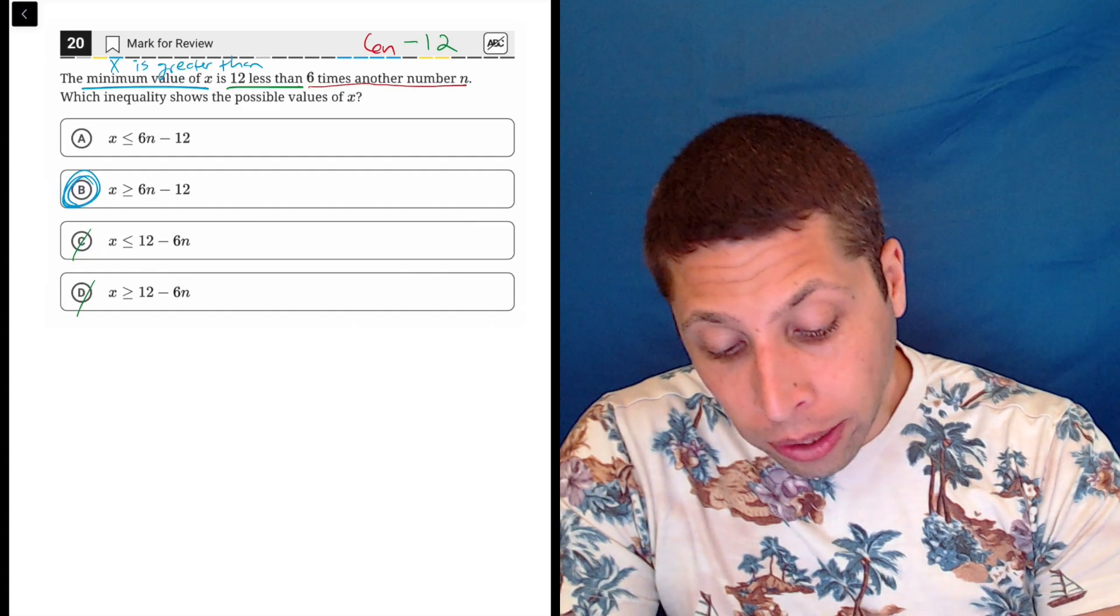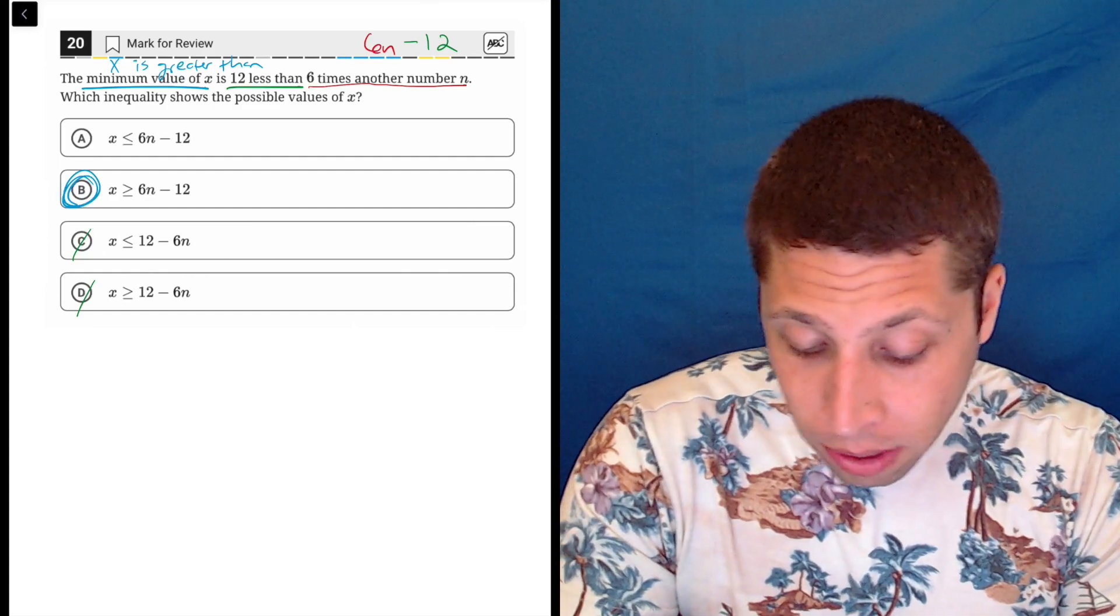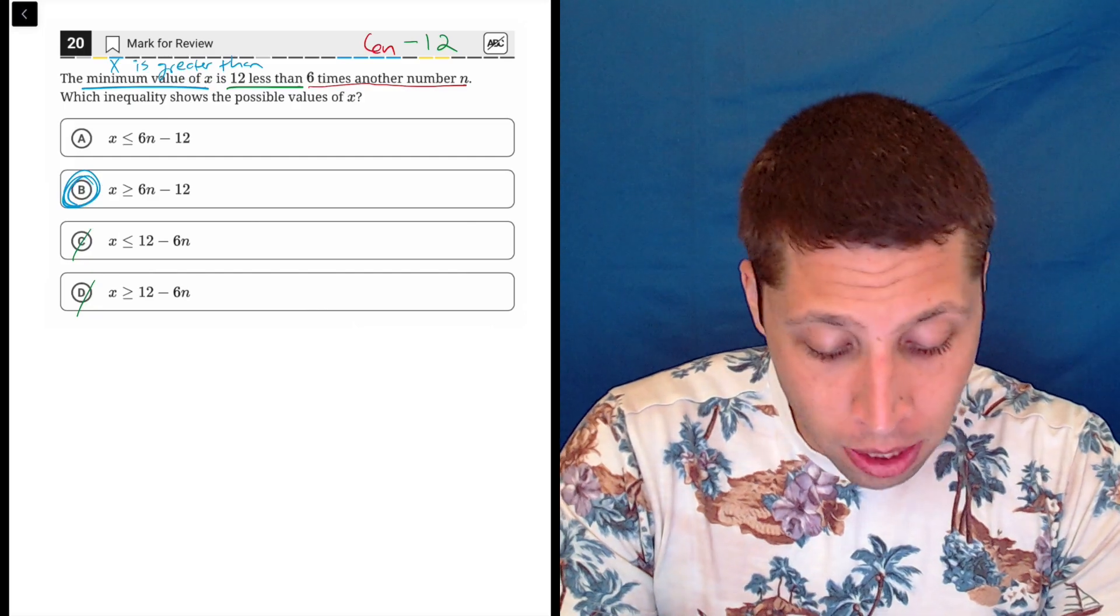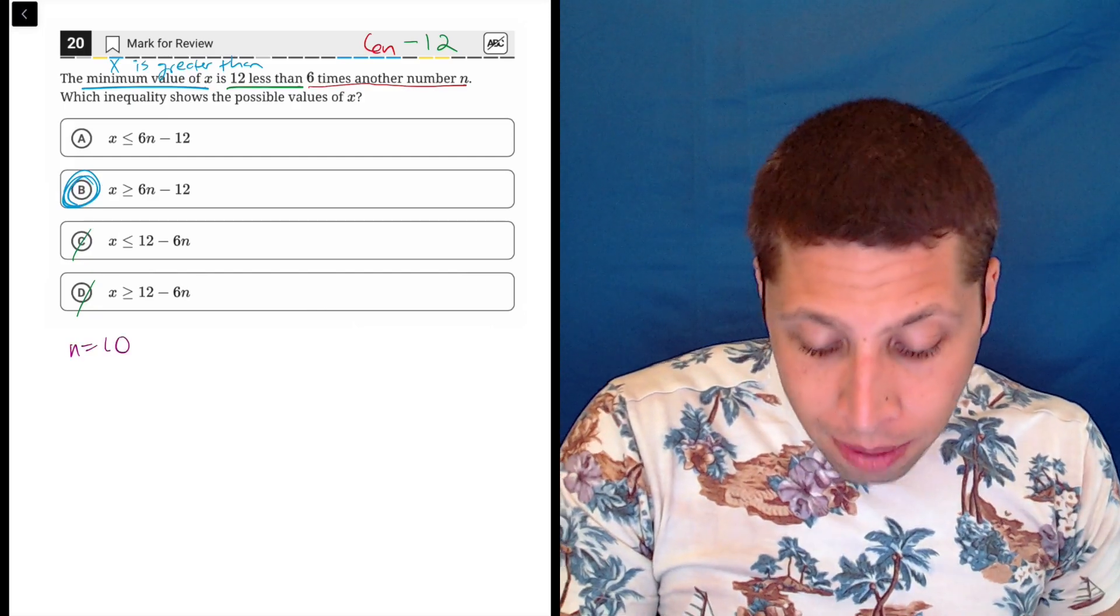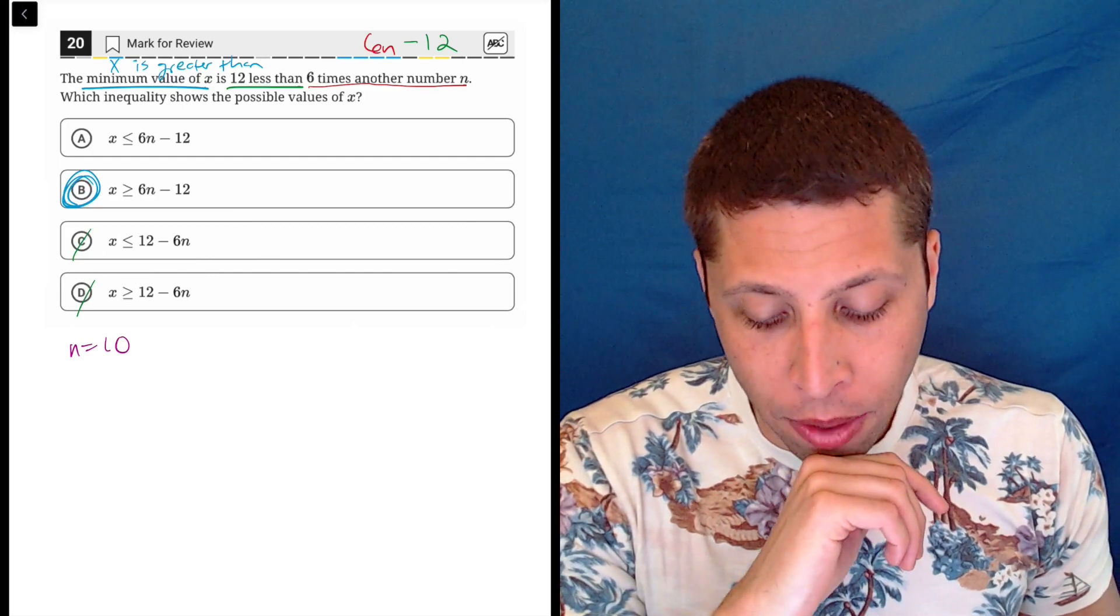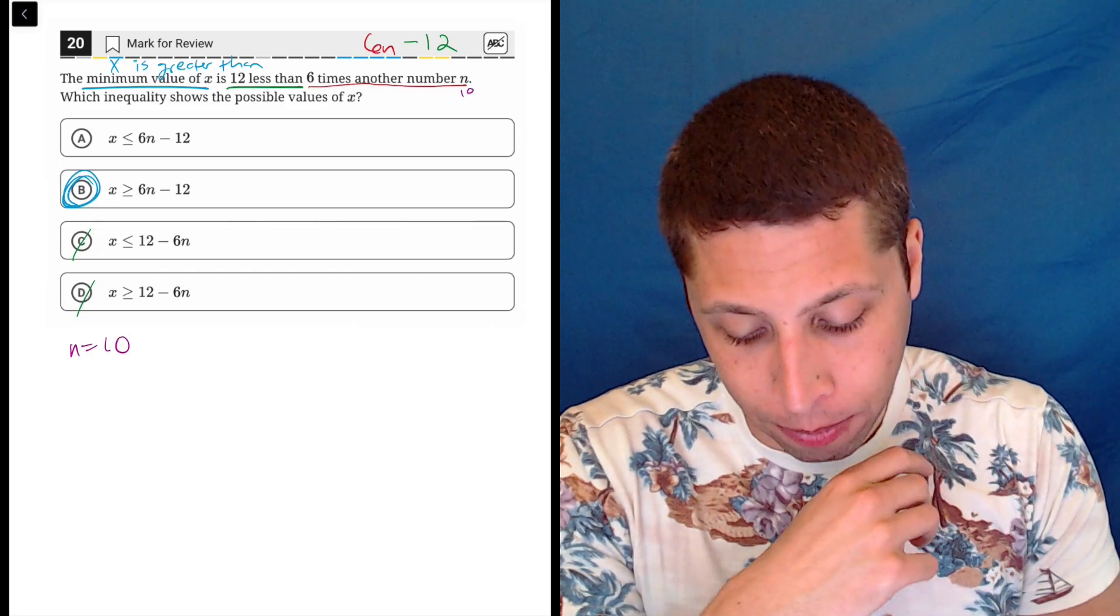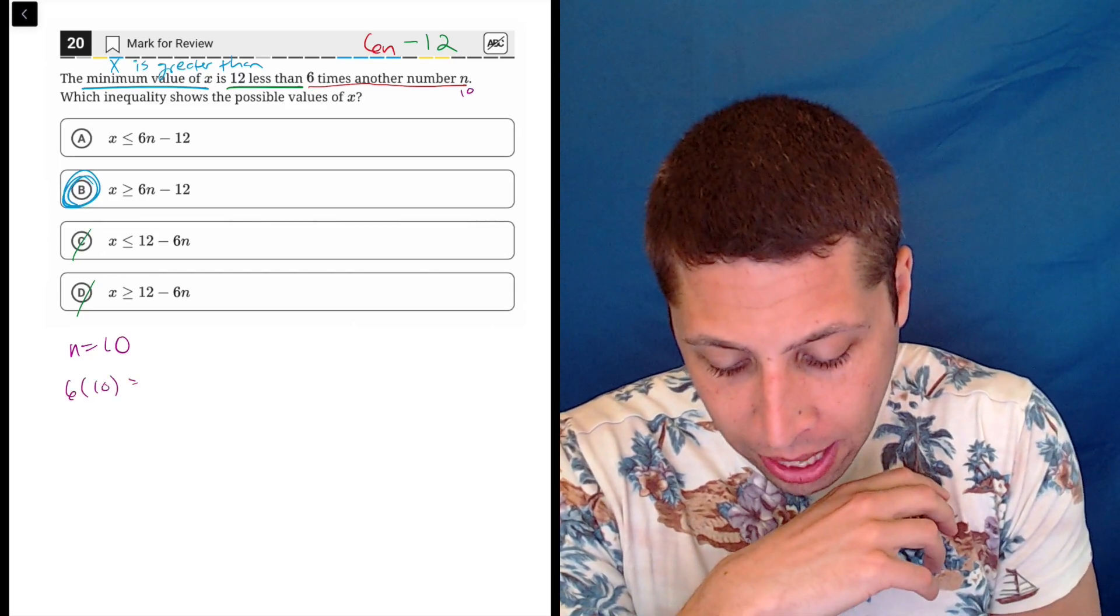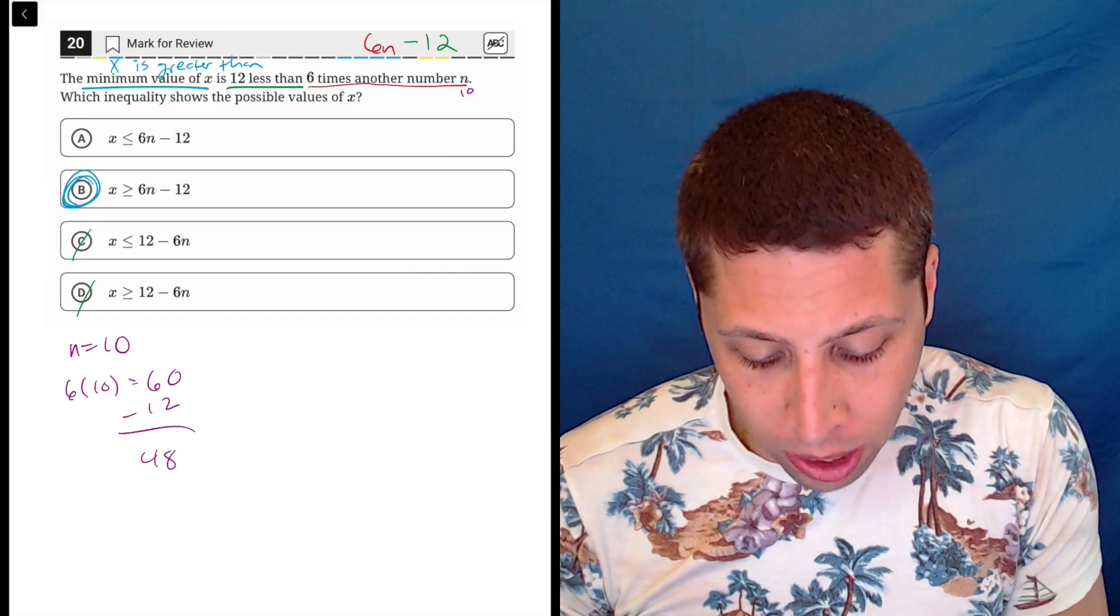We could probably use a little arithmetize here if we wanted to, to better understand it. There's no reason we can't pick some random number for n. So maybe we pick something kind of random, like 10. So then it may be easier to understand how this is going to work. The minimum value of x is 12 less than 6 times 10. So 6 times 10 is 60, and then 12 less than that is 48.